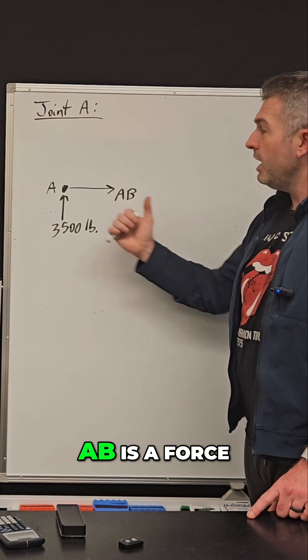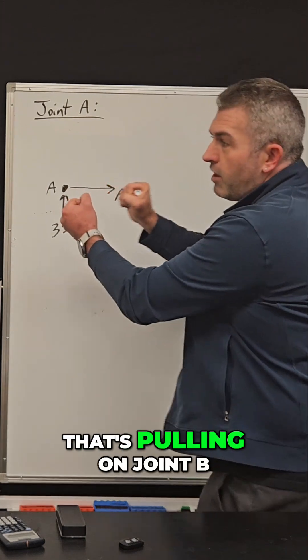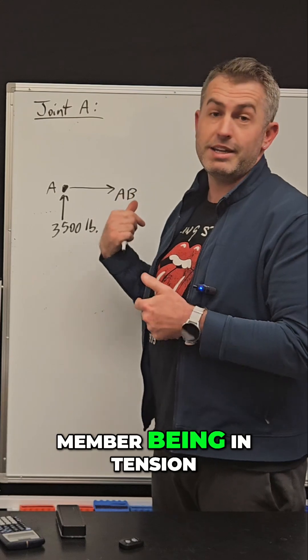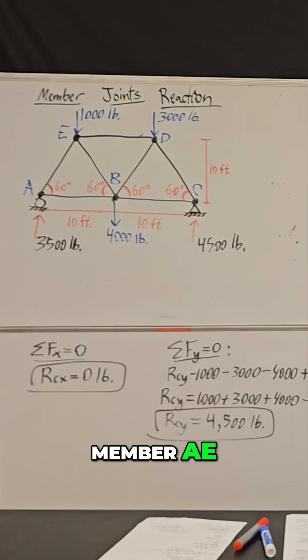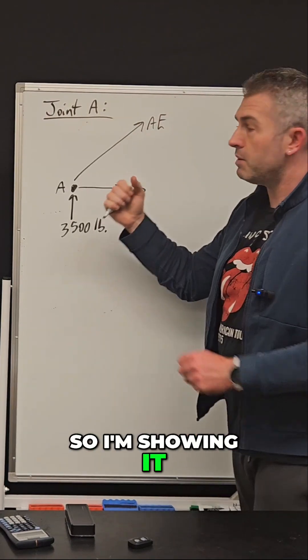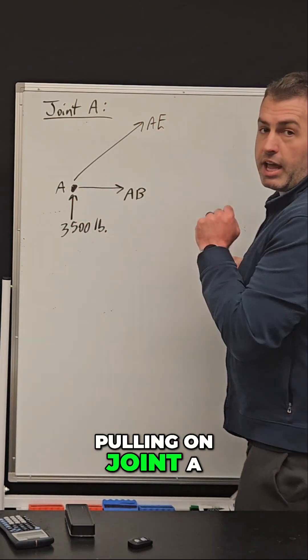So I'm saying member AB is a force that's pulling on joint B. It's pulling it away and that's modeling this member being in tension. Member AE I'm also going to assume is in tension, so I'm showing it pulling on joint A.